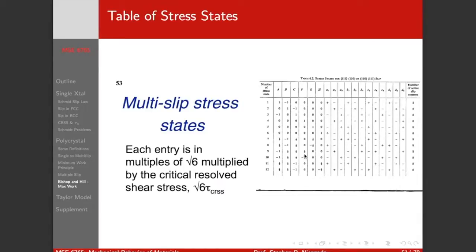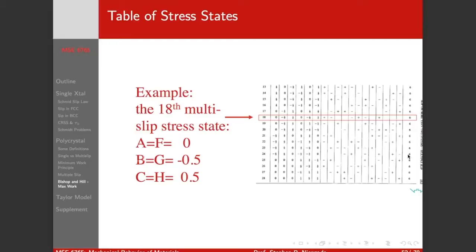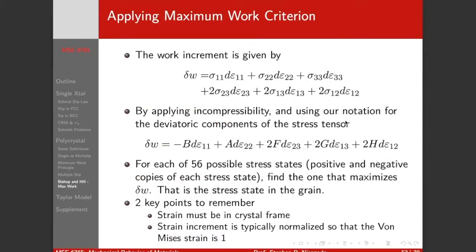What Bishop and Hill did is put them on a table. The first stress state shows the activity of the slip systems — notice there's either eight or six active. So this is the stress state and these are the active slip systems. What we can then do is calculate the work increment for each one of those stress states. We know the strain increment, we know the stress state — that gives us the work. We can compute it from the table using the five components of the deviatoric stress.